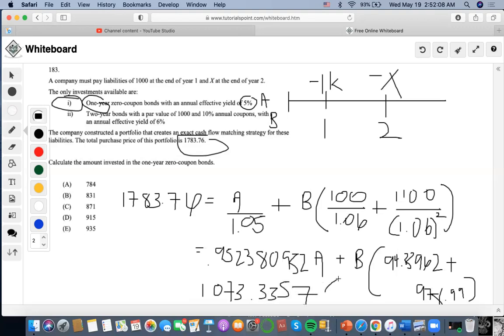I'm going to combine it with this one: so plus 94.33962 and get 1073.3357B.